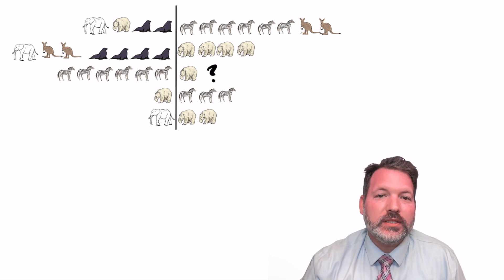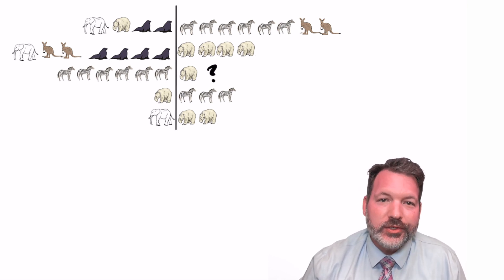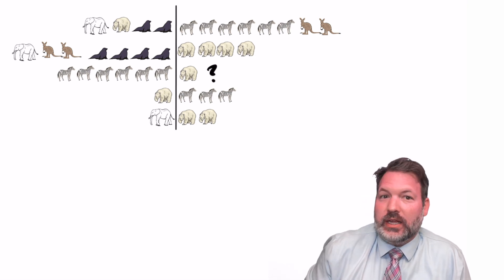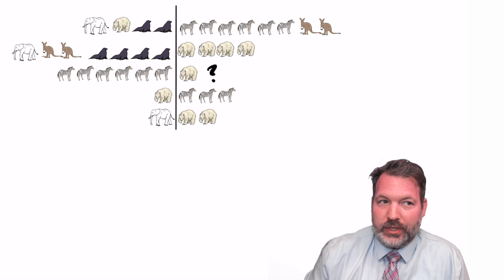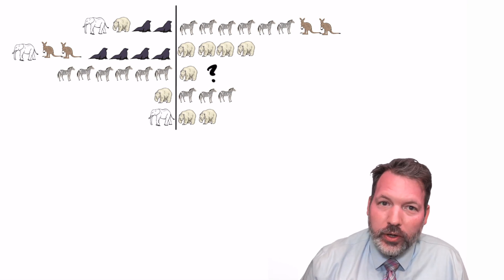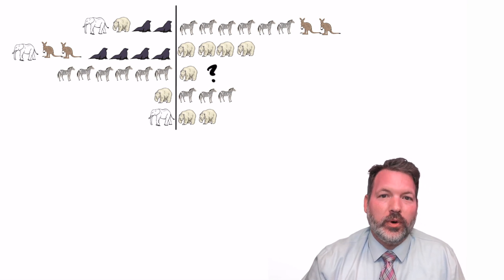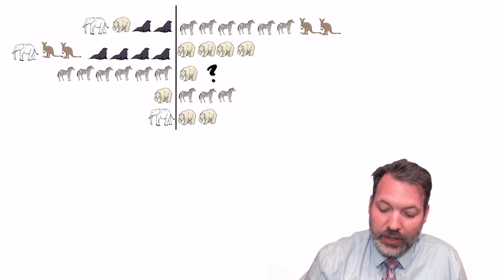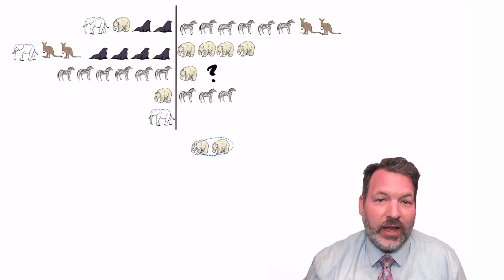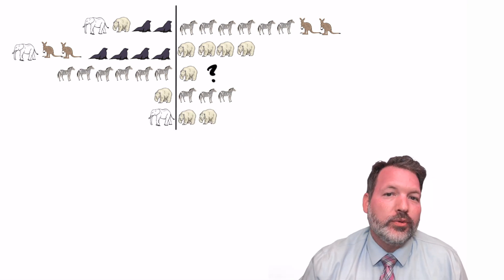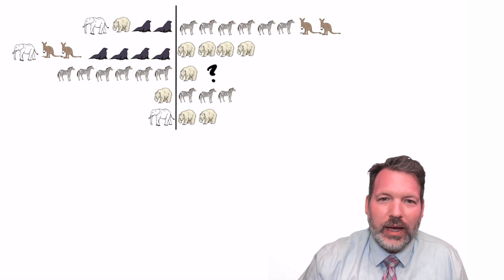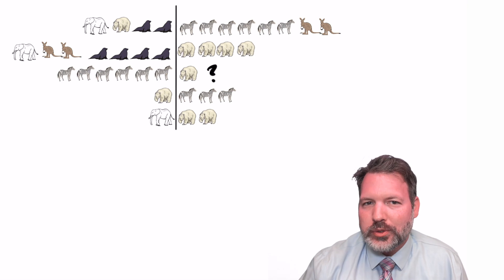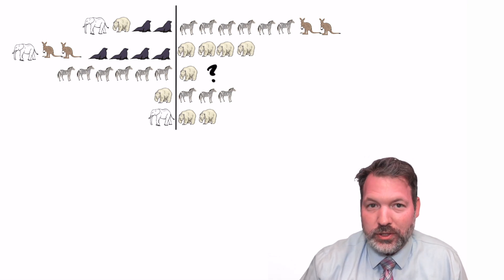One quick thing to note here is this already represents a certain amount of abstraction. This is a fanciful scenario - we're not sitting outside with an ark and all these animals, but we could, right? You could imagine a situation where this was actually going on. Instead, we're moving pictures of animals around. But for this first go-through, we're going to try and keep it at just that level of abstraction. I don't want to introduce a bunch of symbols or start writing equations just yet.